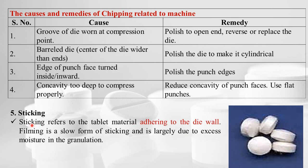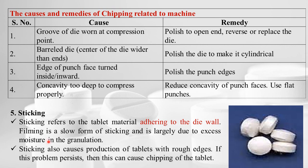Sticking refers to tablet material adhering to the die wall. Filming is a slow form of sticking and is largely due to excess moisture in the granulation. Sticking mainly results from a large amount of excess moisture in the granulation. It causes production of tablets with rough edges, and if the problem persists, it may later result in chipping.